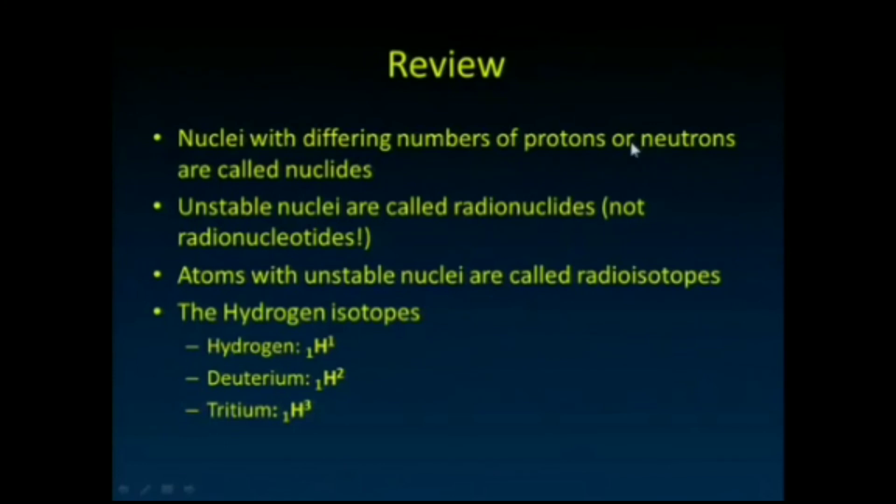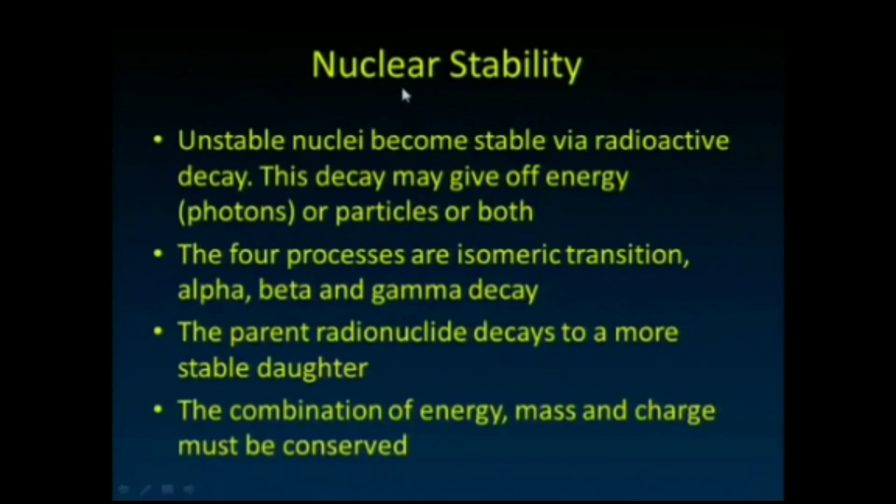So by way of review: nuclei with different numbers of protons or neutrons are called nuclides. Unstable nuclei are called radionuclides—not radionucleotides, we're not studying RNA or DNA. Atoms with unstable nuclei are called radioisotopes. Here are some of the hydrogen isotopes: deuterium and tritium. Unstable nuclei become stable via radioactive decay. That decay may give off energy in the electromagnetic spectrum—pure energy gamma ray photons—or may give off particles, or frankly some things decay using both schemes. The four processes are isomeric transition, alpha decay, beta decay, and gamma decay.